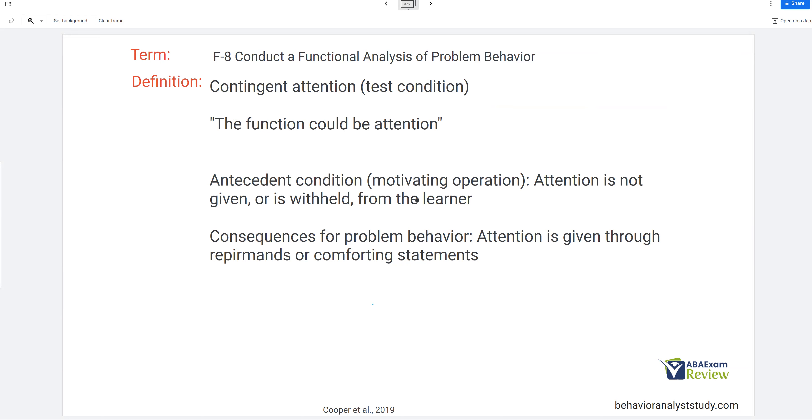We're going to arrange the antecedent conditions, the motivating operations, to where attention is not given or is withheld from the learner. So what are we doing through this method? We are increasing the value of attention by depriving the learner of attention. Then when the learner engages in problem behavior, we're going to provide the attention. Now you might say, aren't you reinforcing the behavior? Yes. And that's the whole idea behind the FA. We're going to evoke behavior and then give it what it wants, provide it with that maintaining function consequence and see if that behavior is affected by the consequence. In this case, if the attention changes the behavior, we can start to say, all right, this might be attention maintained.